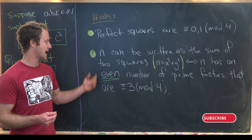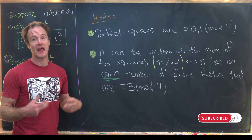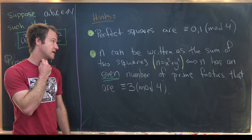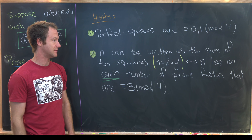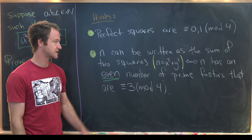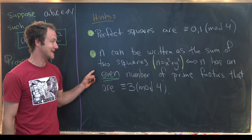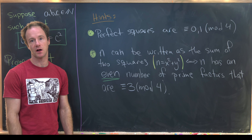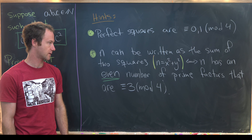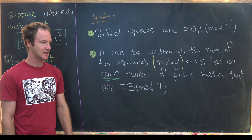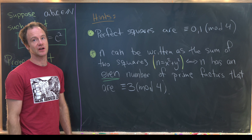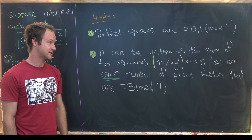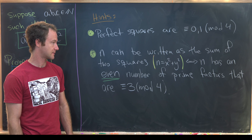The second hint has to do with whether a number can be written as the sum of two squares. n can be written as the sum of two squares if and only if it has an even number of prime factors that are congruent to three mod four. I've proved that on the channel before — there's a playlist involving writing things as sums of squares if you want to look for that.